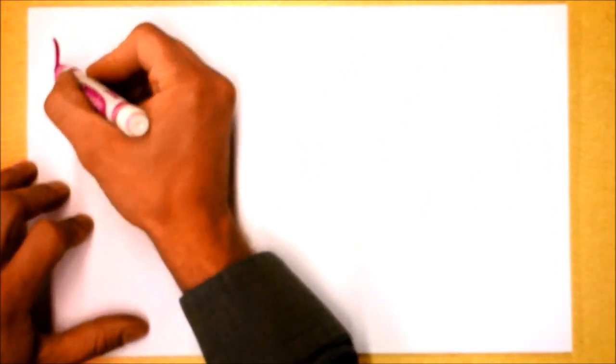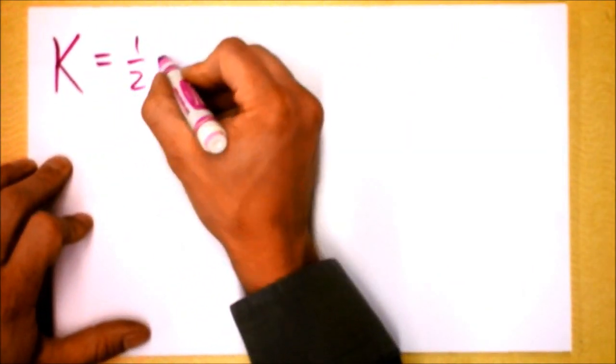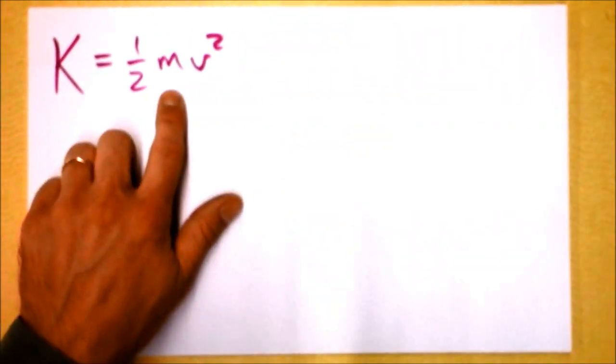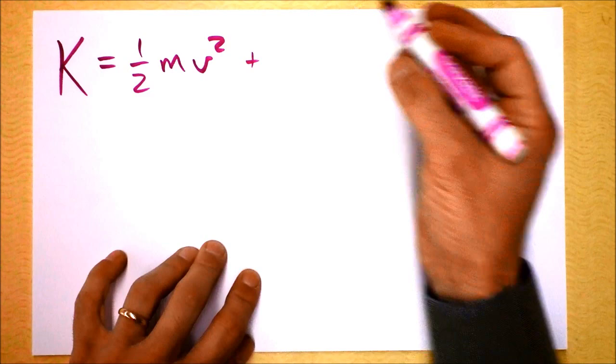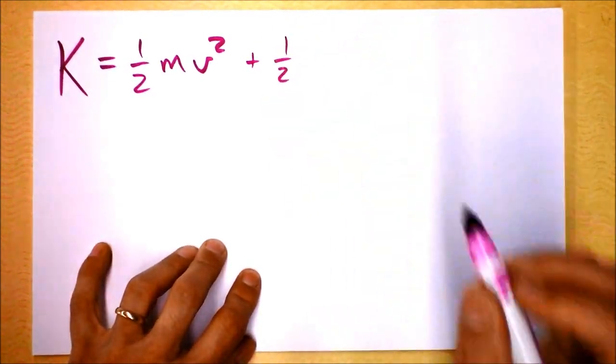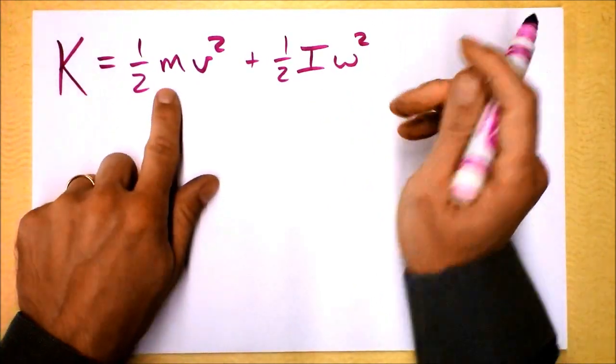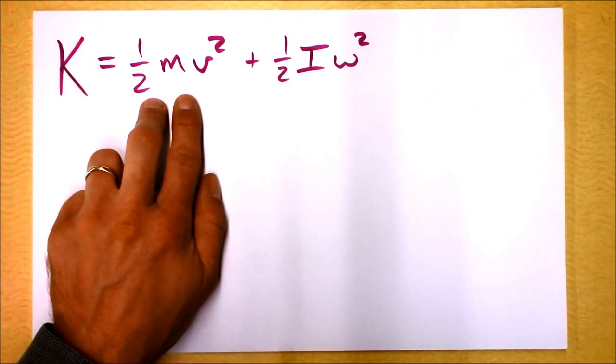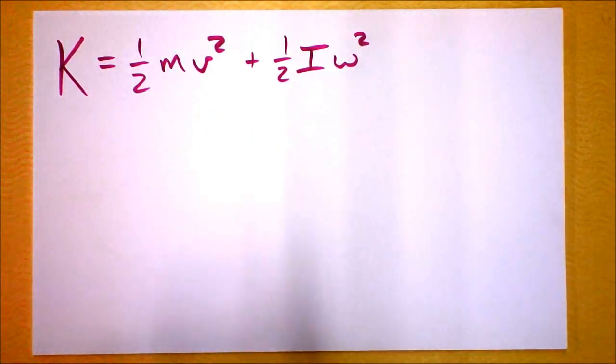So what we're doing is we're going to think about the energy of things that are rolling. In general, that kinetic energy is from two things. There's the motion of the center of mass, this is what we already know. And there's also the fact that the sucker is spinning as it rolls, and that's going to be one-half I omega-squared. So this is kind of linear kinetic energy and this is rotational kinetic energy.